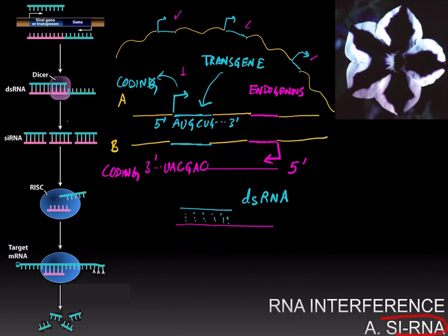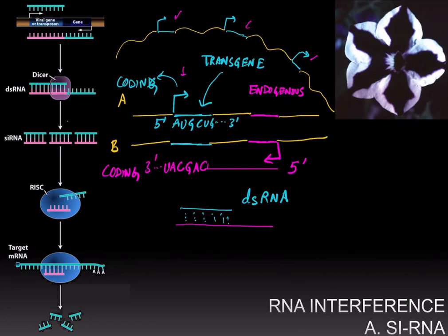Finally, it's worth mentioning that small interfering RNAs, or siRNAs, are an important tool in molecular biology research. To understand the function of a particular gene, we can design a double-stranded RNA and introduce it into cells, thereby silencing that gene and reducing its protein expression. We can then study the phenotypes of the cells to determine what function that gene performs. Reducing protein expression using this mechanism is called knocking down a gene.